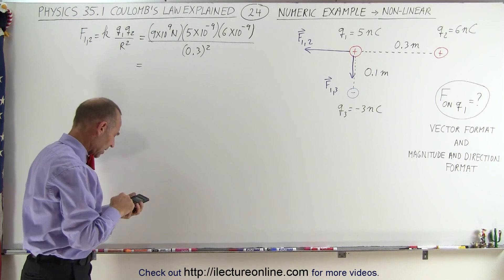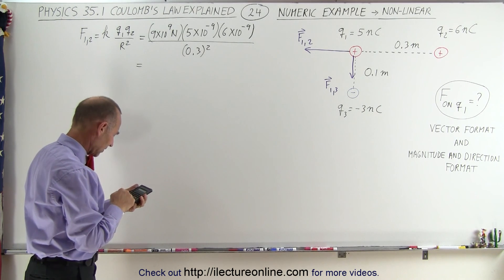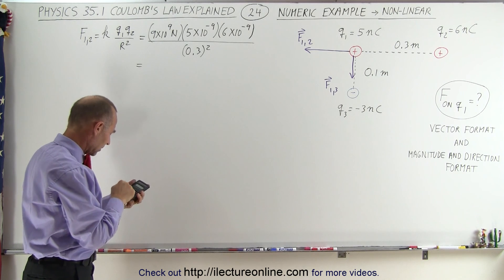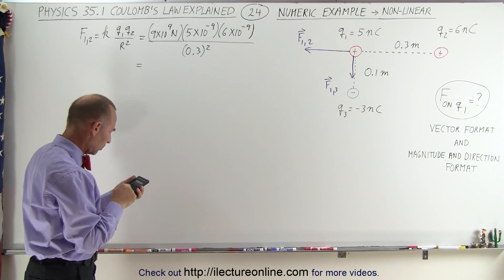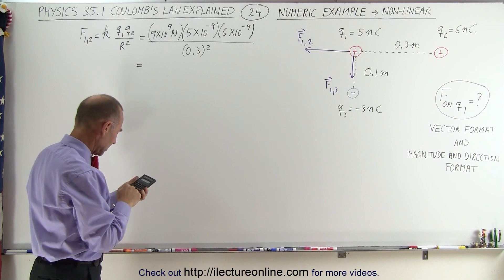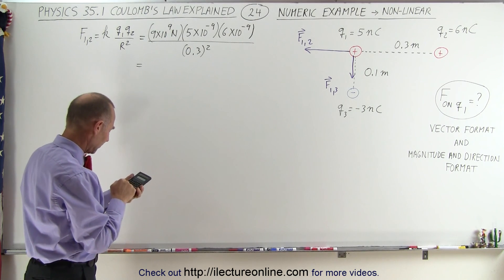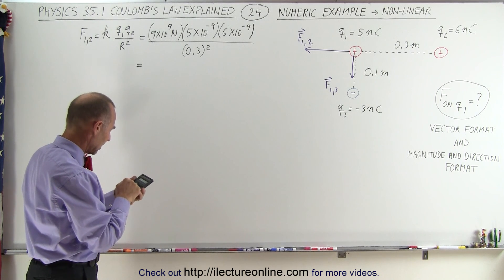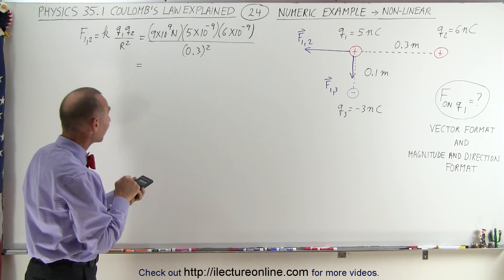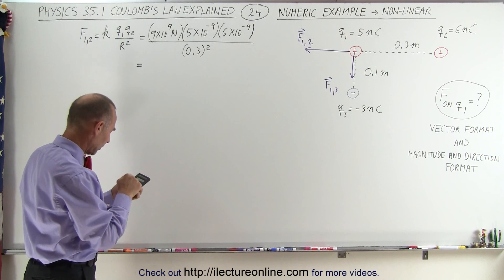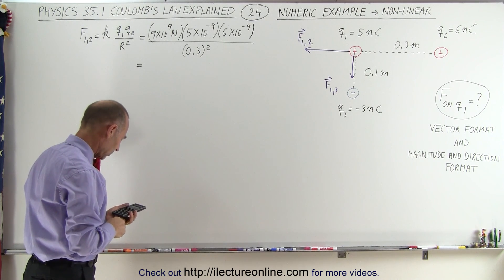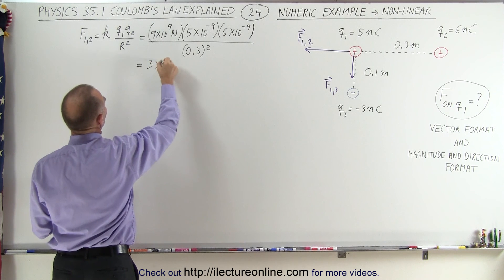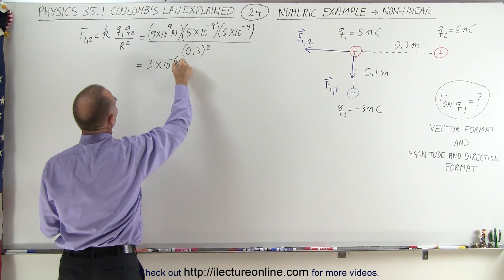Calculating: 9e9 times 5e-9 times 6e-9, divided by 0.3 squared, equals 3 times 10 to the minus 6 newtons. So the magnitude of F1,2 is 3 times 10 to the minus 6 newtons — a very small force, of course, due to the fact that these are very small charges in the nanocoulombs.